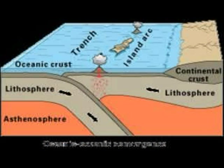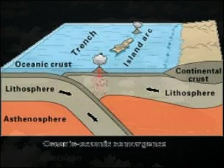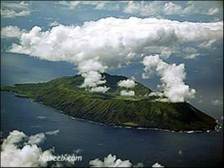In an oceanic-oceanic boundary, the older, colder oceanic plate subducts, and magma forms in the mantle above the subducted lithosphere. Like the continental-oceanic boundary, a volcano forms and an oceanic trench develops. After the magma comes out, it cools and becomes an island. An example is the Marianas Island.